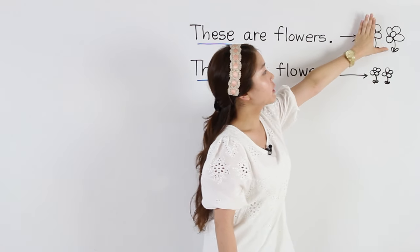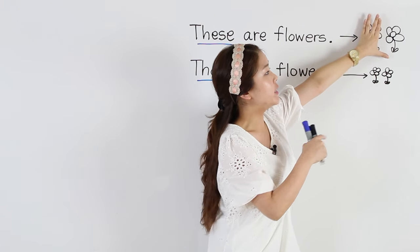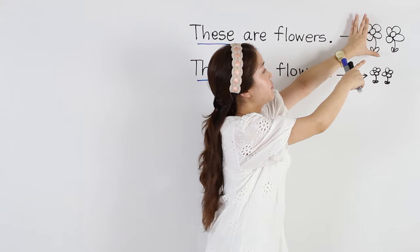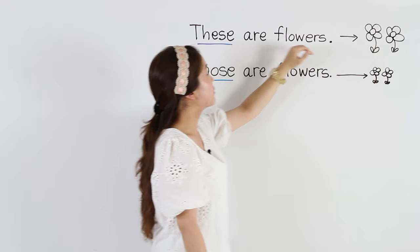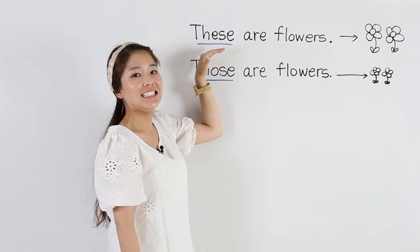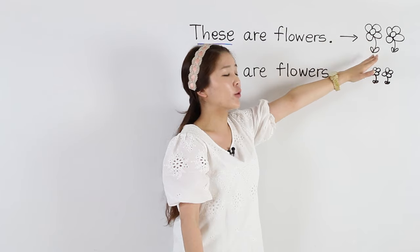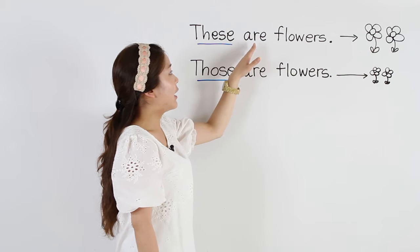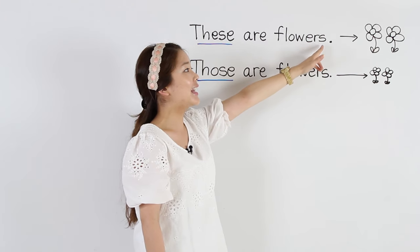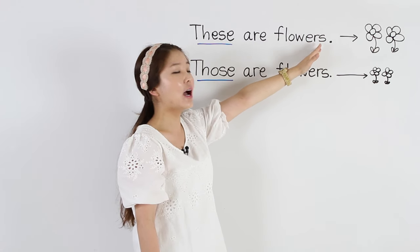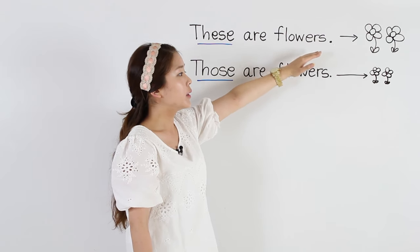Now, we know if there's just one and it's close to us, we say this is a flower. But if there's more than one — it's plural — we have to say these. These are flowers. I changed the be verb to are and I added an S at the end of flower. These are flowers.